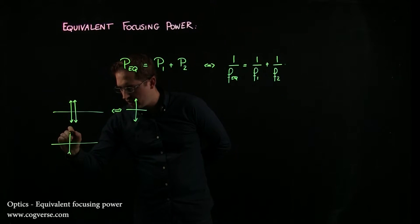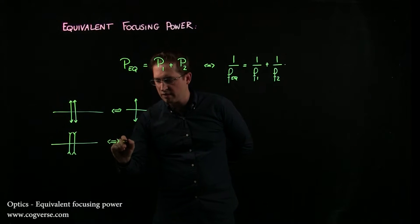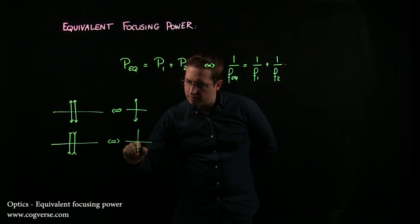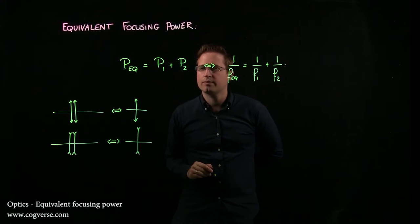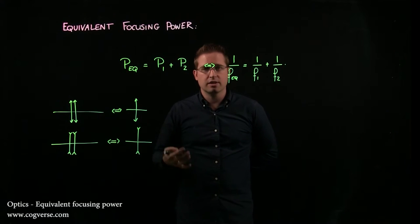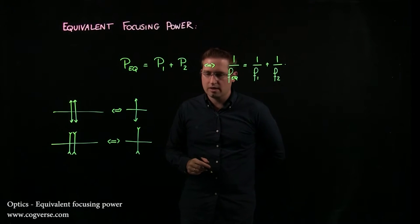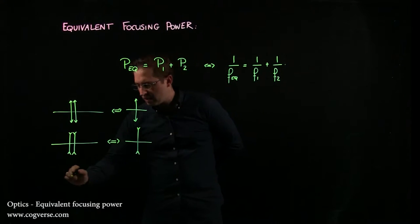With the same logic, if we assemble two diverging lenses next to each other, then they will behave as one diverging lens. Because p1 and p2 are both negative, therefore p equivalent is negative and the equivalent lens is a diverging lens.